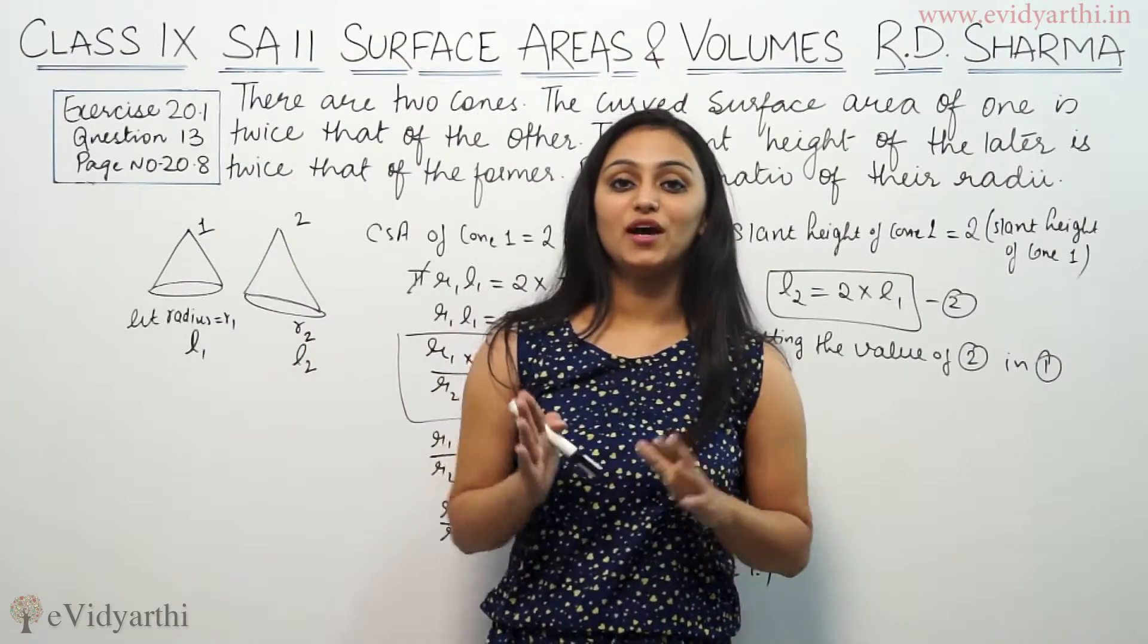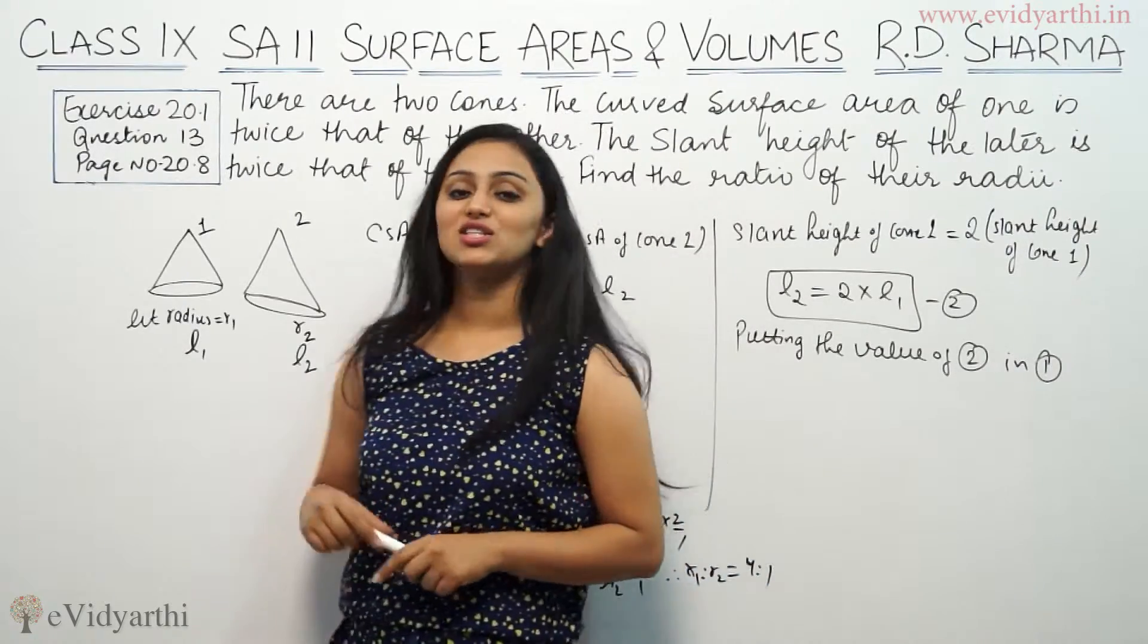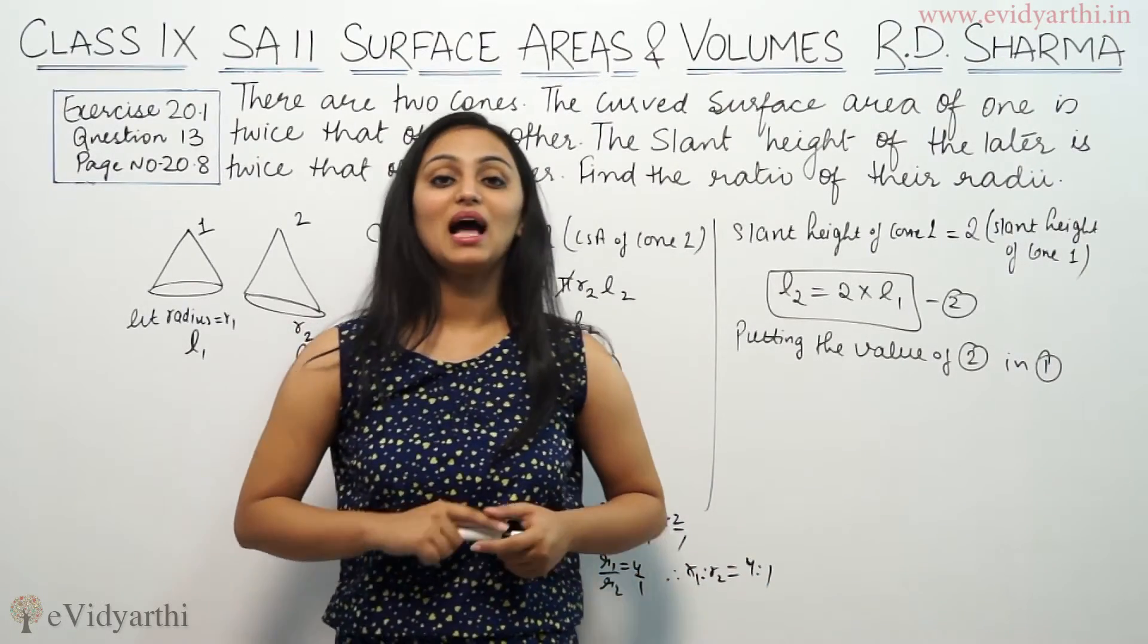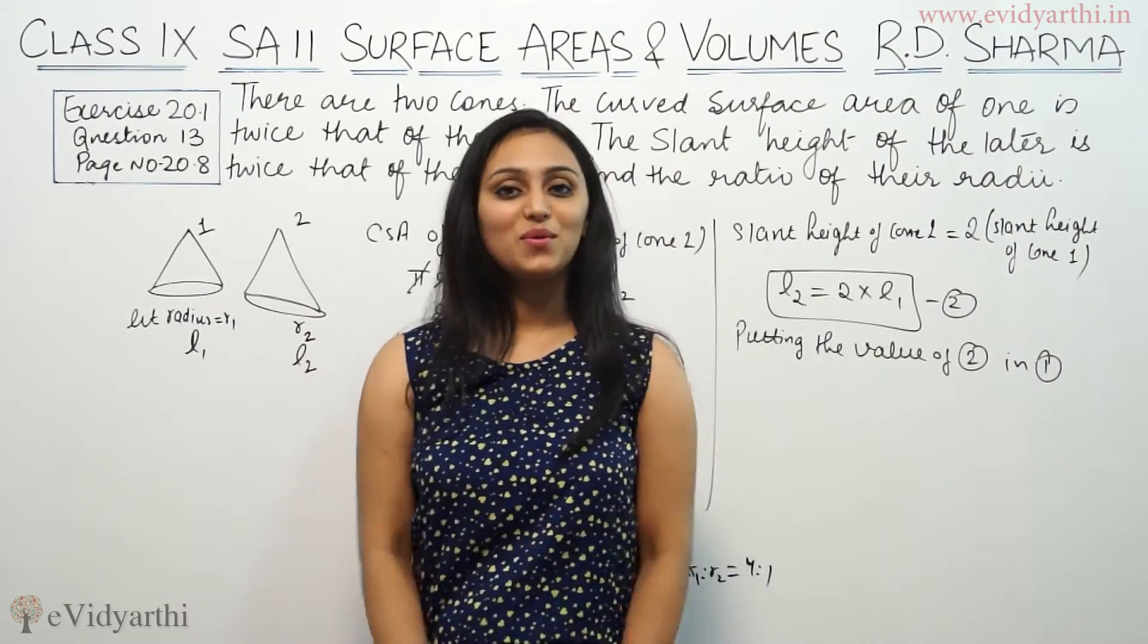So the radius ratio is 4 is to 1. So this was question 13 from R.D. Sharma and do watch the next video for some more questions. Goodbye.